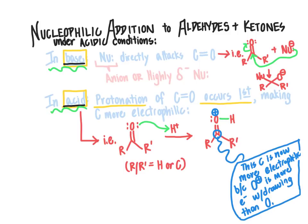In the last segment, we talked about nucleophilic addition to aldehydes and ketones under basic conditions. Now we're going to talk about nucleophilic addition to aldehydes and ketones in acidic conditions. Under basic conditions, the nucleophile — typically an anionic nucleophile or an atom with very negative polarization in the lone pair of electrons — would directly attack the carbonyl carbon as the very first step of the reaction mechanism.